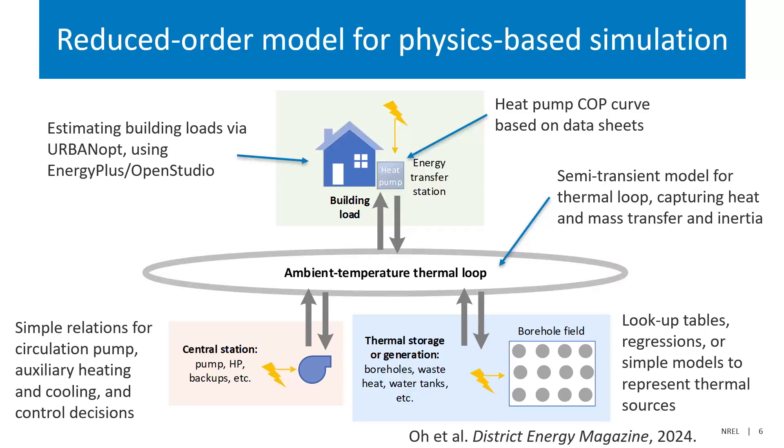Plugging in and exchanging heat with that loop, we have all of the buildings, which requires doing some building modeling and understanding how heat pumps perform given different entering temperatures from the main thermal loop. There are also thermal sources and sinks — we're mostly focused on borehole fields, relying on collaborators including Lawrence Berkeley National Labs for detailed borehole performance modeling. We also model circulation pumps, an auxiliary heating and cooling system, and a control decision architecture that determines how all these pieces run together.